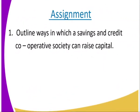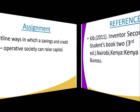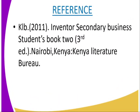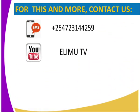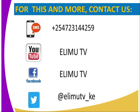Assignment: Outline ways in which a Saving and Credit Cooperative Society can raise capital. Reference: KLB 2011, Secondary Business Studies Book 2, Third Edition. If you have any questions, you can reach us through SMS, YouTube, Facebook, or Twitter. Stay tuned. Thank you.